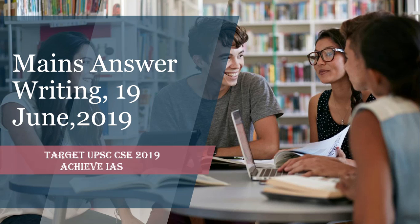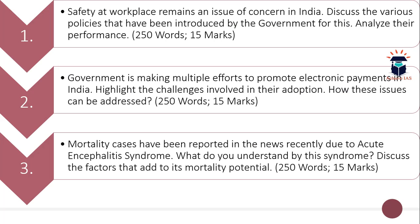For the purpose of CSE 2019, we have a dedicated mains answer writing series in which we daily give you a certain number of questions for which you have to write the answers. Today is 19 June. The first question is: 'Safety at workplace remains an issue of concern in India. Discuss the various policies that have been introduced by the government for this and analyze their performance.' You have to analyze the various policies introduced by the Government of India for workplace safety. Word limit is 215 and maximum marks are 15.